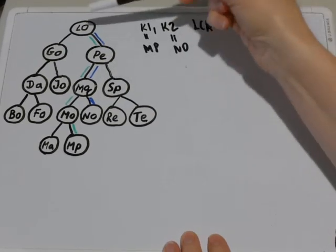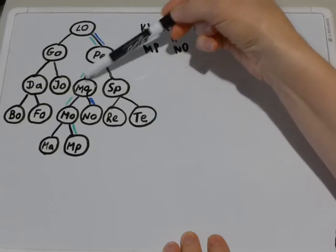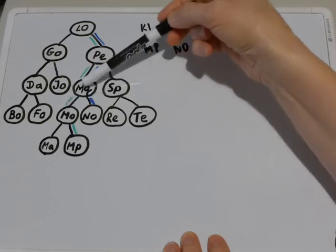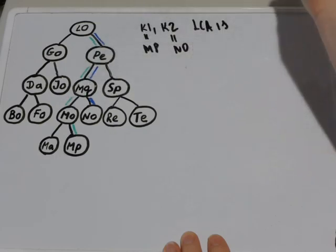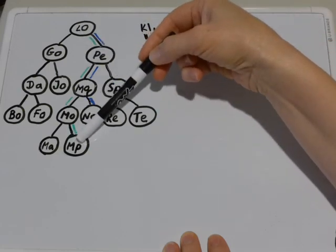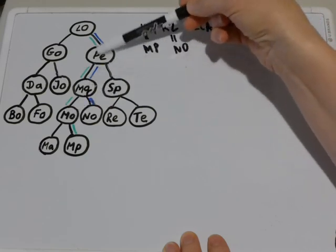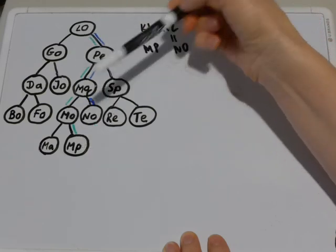Now you can see that some portion of these paths are the same for both nodes and then paths diverge at node MQ.